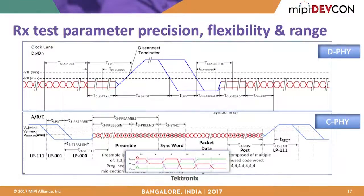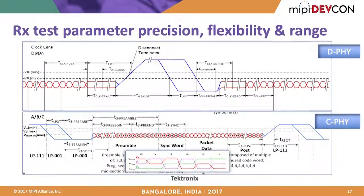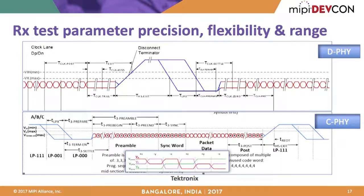The burst waveform for both D-PHY and C-PHY is a composite waveform having both an LP region and a high-speed portion, with multiple timing parameters that must be controlled. The test setup must have flexibility to control all these parameters with sufficient range and precision. Designers often need a wider range than the spec allows in order to test for margins and to evolve specifications to future versions.